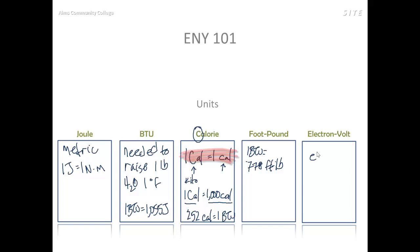Here we have the electron-volt, also known as lowercase e, uppercase V. This is the electric potential difference of a volt moving through an electric field.